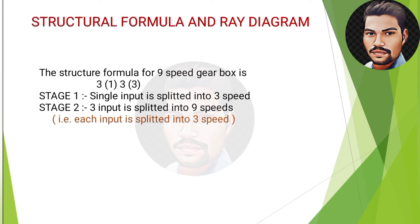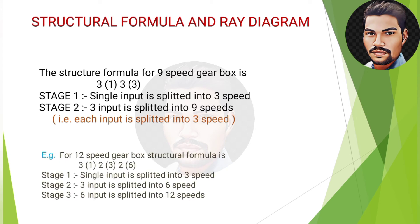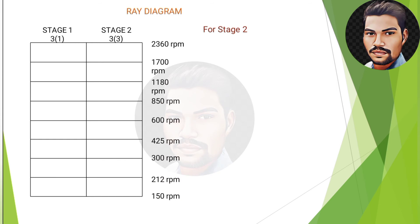For example, for 12 speeds the smallest factors are 3 × 2 × 2, arranged in descending order. Multiplying: first factor 3 by 1 gives 3, put in second bracket; 2 × 3 gives 6, put in third bracket; 2 × 6 gives 12. So the structural formula for 12 speeds is 3(1) × 2(3) × 2(6).